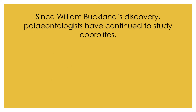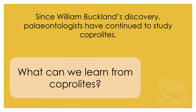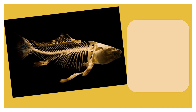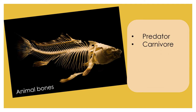Since William Buckland's discovery, paleontologists have continued to study coprolites. But what can we learn from coprolites? A coprolite with animal bones inside would suggest that this sample came from an animal which was a predator and a type of carnivore.